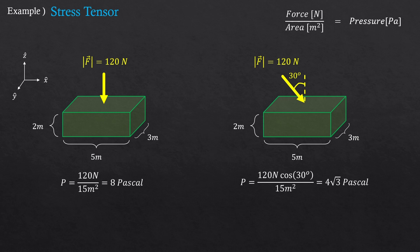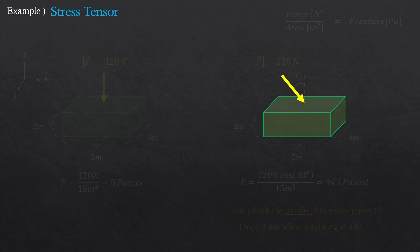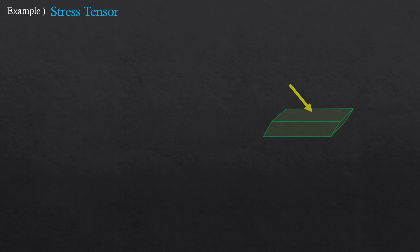So 120 newtons times cosine of 30 degrees divided by 15 meters squared, which should be 4 squared of 3 pascals. So this much of pressure was given on the top surface. But is that it in real life? Would this box feel being pushed downward only? How about the parallel force component? Does it not affect the box at all?